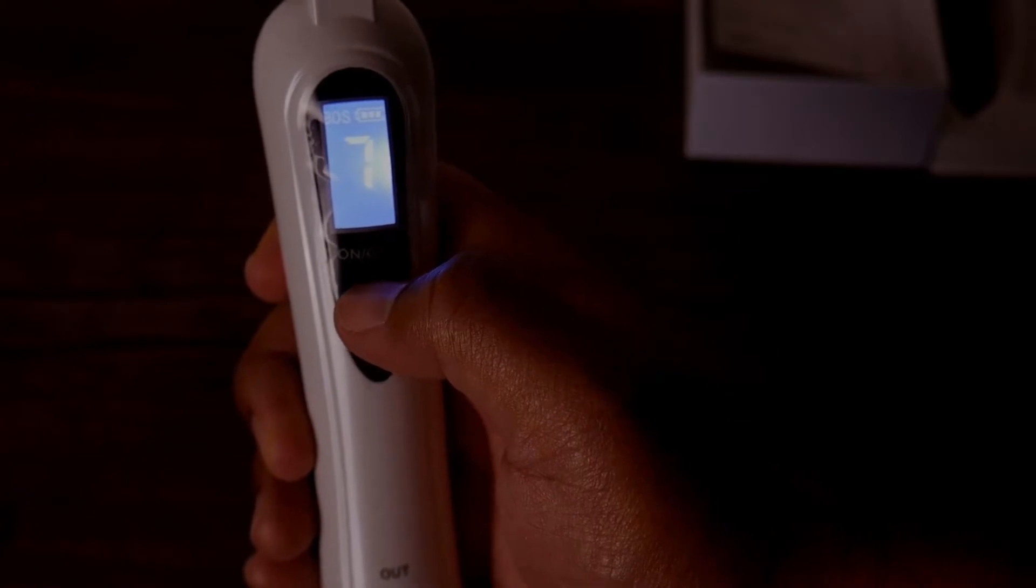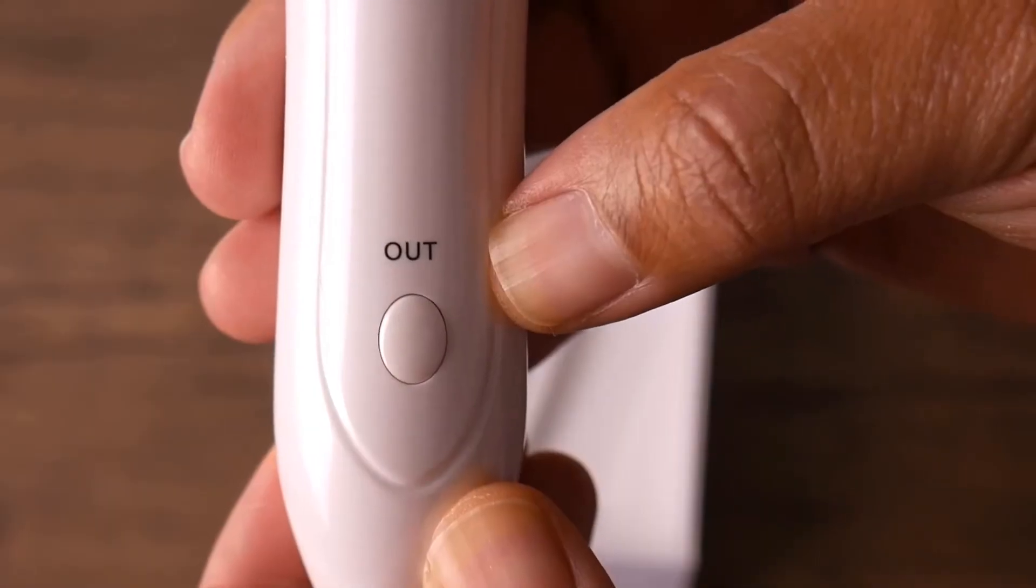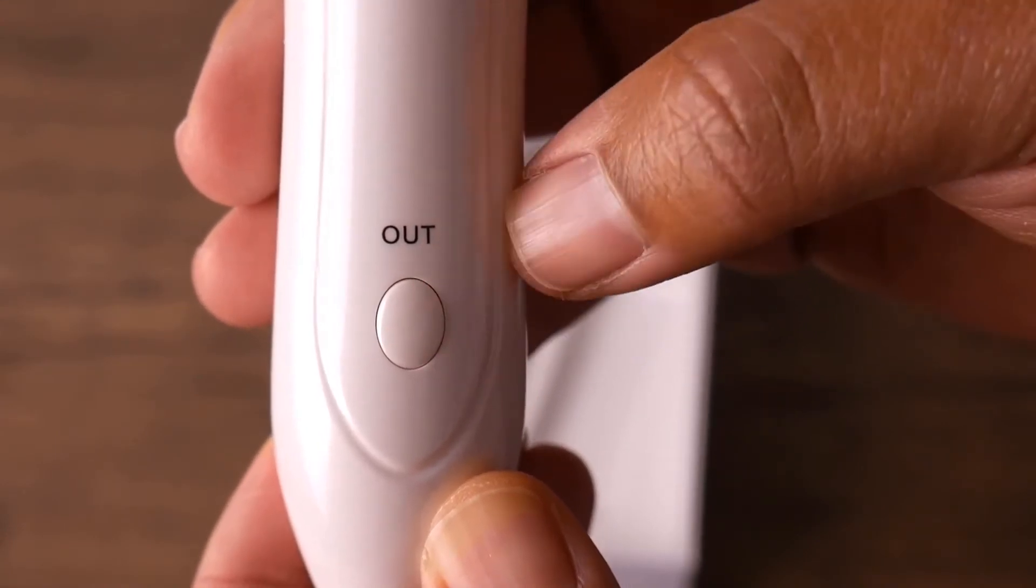You can adjust the intensity by simply touching your top button as shown on the screen. To operate your spot remover, you use your bottom button.